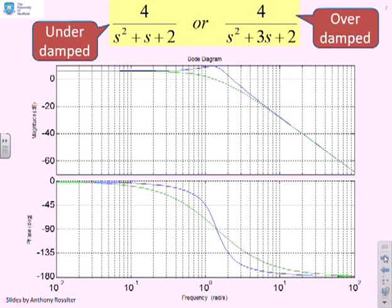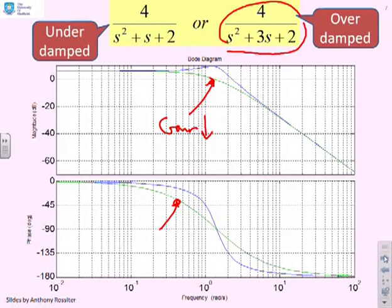Here you can see the plot. We've got a normal overdamped system, 4 over s squared plus 3s plus 2. The corresponding Bode diagrams are this green one. What do you notice? The gain is always reducing, as you expect, going down for all ω. Similarly, the phase is going down for all ω.